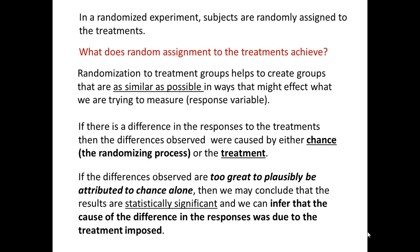Randomly assigning experimental units or subjects to the different treatment groups tends to balance out all the other variables between the groups. Any variables that could have an effect on the response should be equalized between the groups, and therefore should not be confounding. If an observed difference is too large to be expected by random chance, then a plausible explanation is the treatment received, and we can assign a cause and effect relationship between the explanatory and response variables.